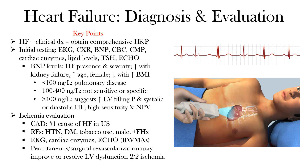BNP levels are elevated in patients with increased right or left ventricular filling pressures, and systolic or diastolic heart failure. BNP values tend to be greater than 400 in those with heart failure. Those with dyspnea and BNP values less than 100 — the low to normal range — are more likely the result of pulmonary disease. These values can be quite helpful clinically.